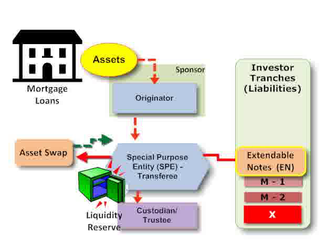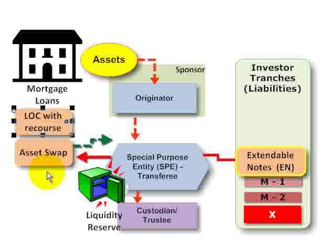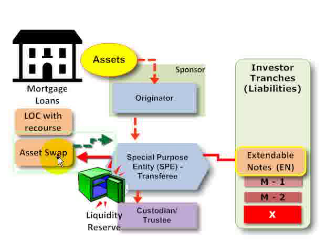So we've now seen two examples of external liquidity support: first, line of credit; and second, the use of asset swaps. We've now seen two types of internal liquidity support and two types of external liquidity support. I hope this was helpful. This is David Harper of Bionic Turtle. Thank you for your time.